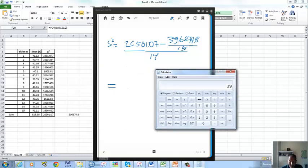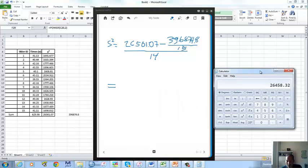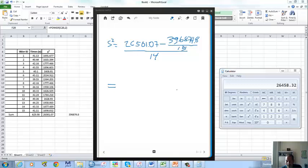So this is 396874.8, divided by 15 and that equals, maybe let's move this over here. So let's write this whole thing down here, 26501.07 minus 26458.32, and all this is divided by 14.